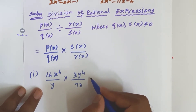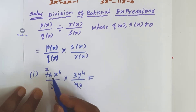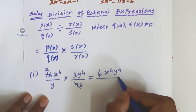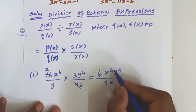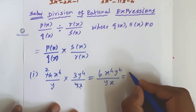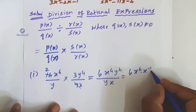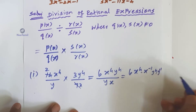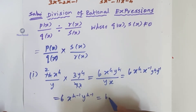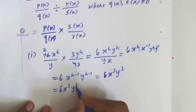Sub-division 1: 14x divided by y, and the divide symbol becomes multiply by 2 into 3, which is 6. That gives x to the power 4 into y to the power 4, divided by y into x. After cancellation, 6 into x to the power 4 minus 1, y to the power 4 minus 1, giving 6 into x cube y cube. So the final answer is 6x³y³.